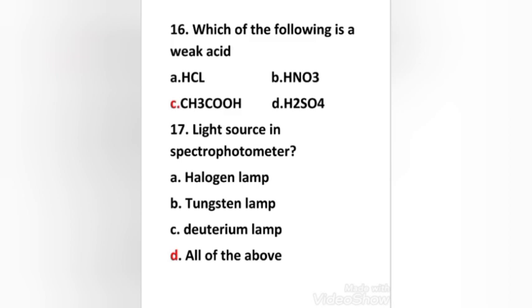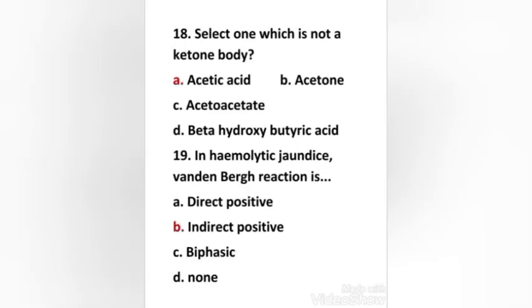Next question: Select one which is not a ketone body: acetic acid, acetone, acetoacetate, beta-hydroxybutyric acid. Right answer is option A: acetic acid. In hemolytic jaundice, van den Bergh reaction is: direct positive, indirect positive, biphasic, none. Right answer is option B: indirect positive.